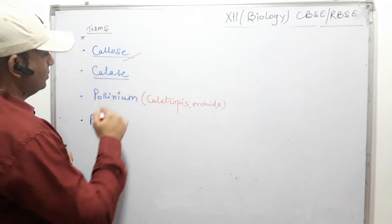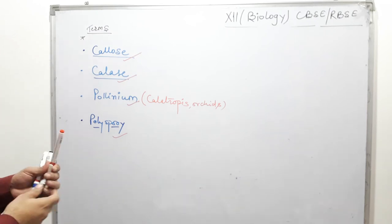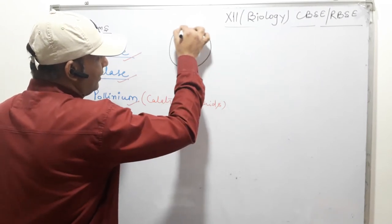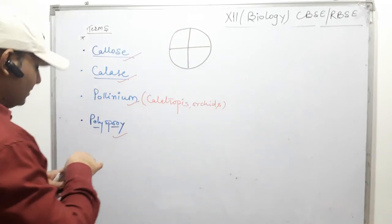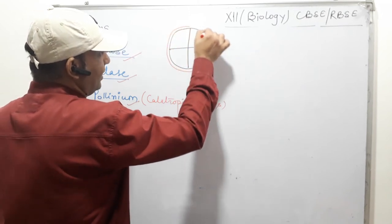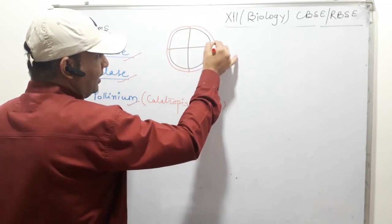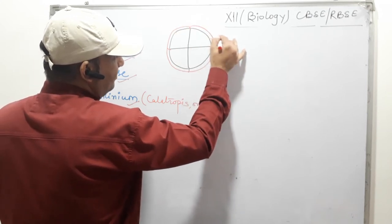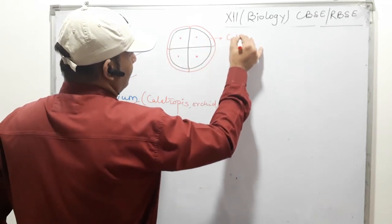Here are some important terms related to this topic. First is callus — it is the membrane of the microspore tetrad. The microspore tetrads are joined by this membrane, which is called callus. So callus is the membrane which joins the four microspores together.